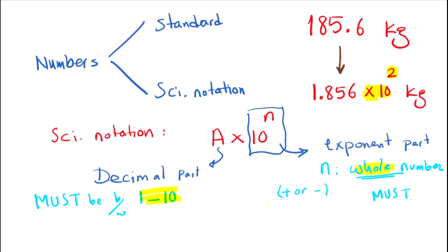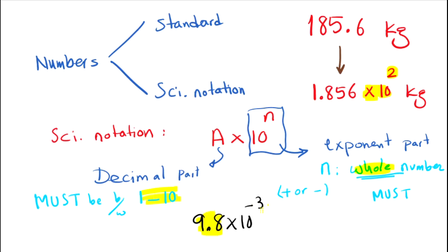Let me work on another example: 9.8 times 10 to the negative 3. Is this a scientific notation number? Yes — the decimal part is between 1 and 10, and the exponent is a whole number. It doesn't matter that the exponent is negative, so we call this a scientific notation number as well.